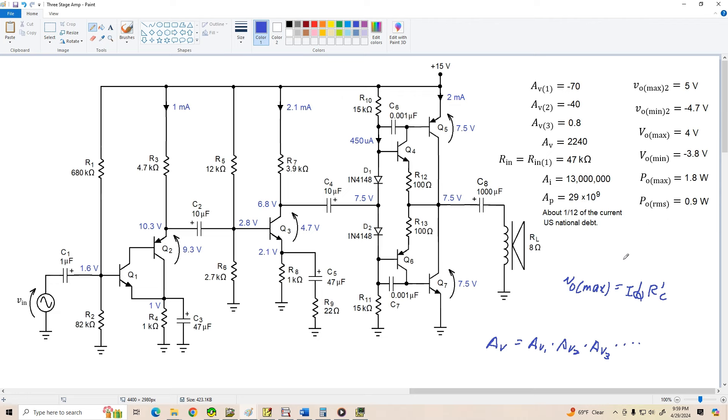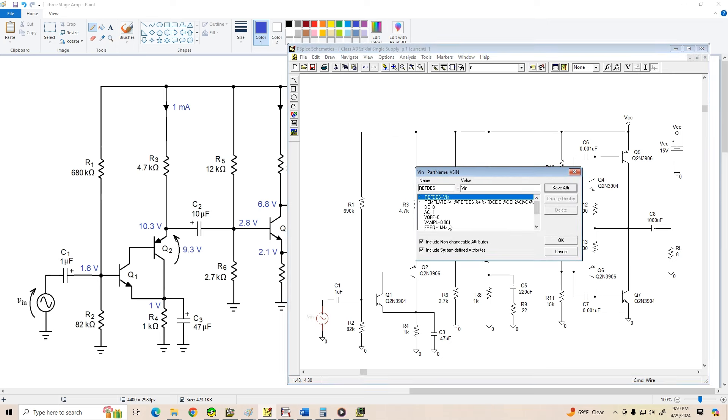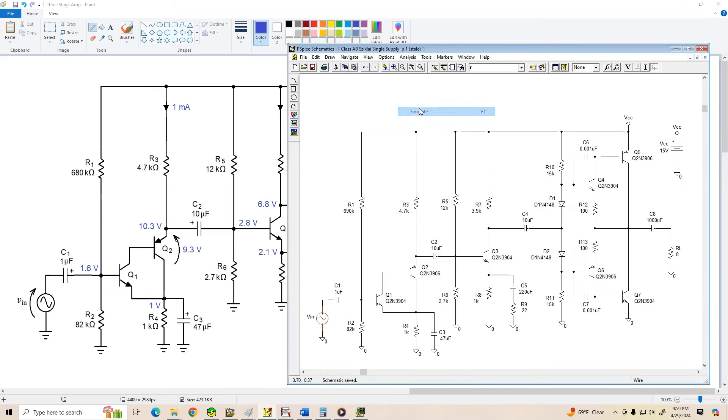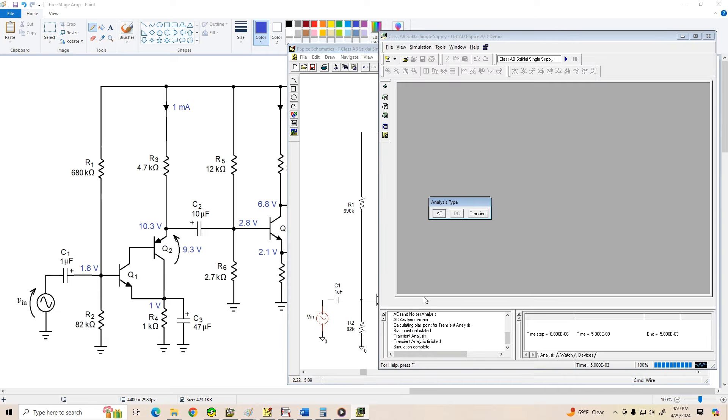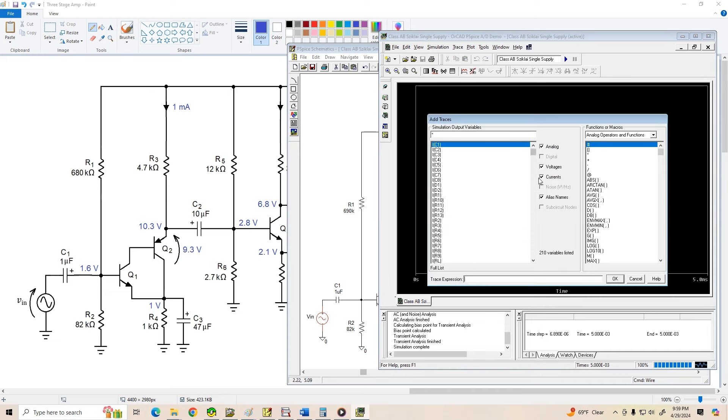Now, what I want to do next is a quick PSPICE simulation to verify the voltage gain of this circuit. So let me call up PSPICE. Here's our schematic editor, and I've already drawn the circuit, and I set my input voltage for an amplitude of 1 millivolt. This amplifier has very high gain, so it's not going to take much to overdrive it. So 1 millivolt is a pretty decent input to start with. So let's do an analysis and simulate it. We'll call up probe.